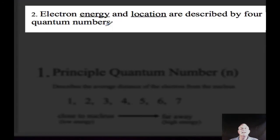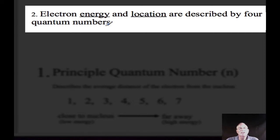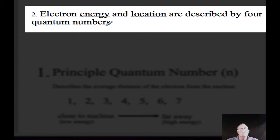The second premise of the quantum mechanical model is that electron energy and location are described by a set of four quantum numbers. Each of these is given as a number, but they describe a different aspect of the electron's energy and its location.